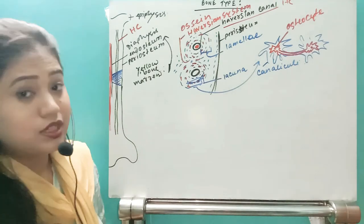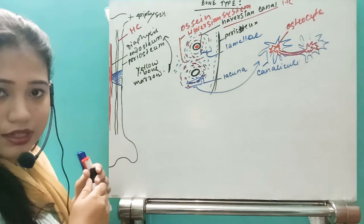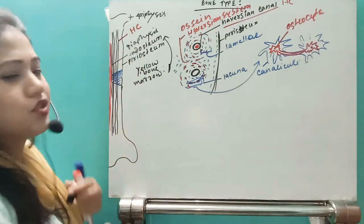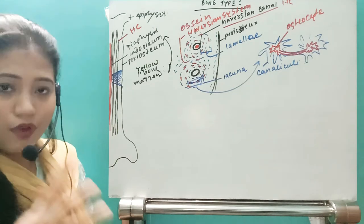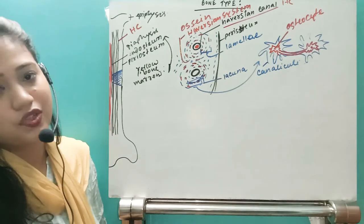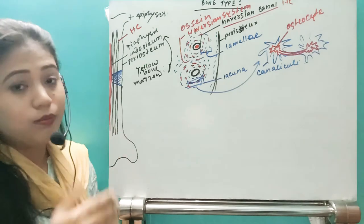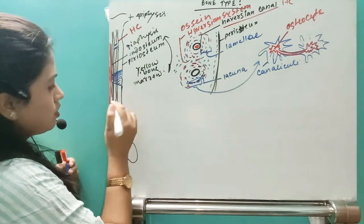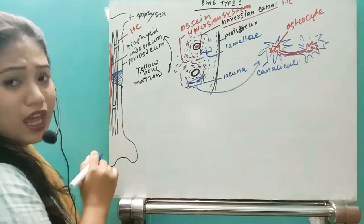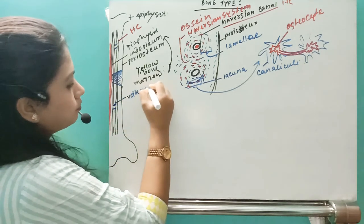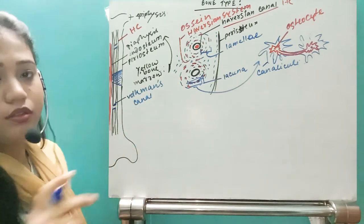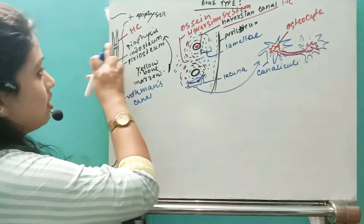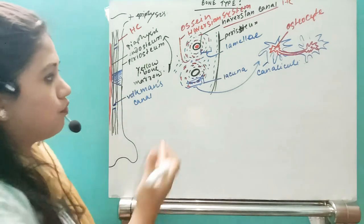Now, an important point: suppose there is one Haversian Canal here and another Haversian Canal nearby. One Haversian system connects with the next Haversian system by an oblique canal. What is that oblique canal called? It is known as the Volkmann's Canal. So one Haversian system connects with the next Haversian system via these oblique canals called Volkmann's canals.